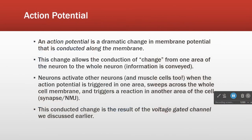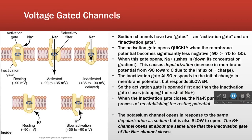It is propagated by voltage-gated channels — channels that open and close in response to membrane potential change. The voltage-gated channels we speak of are sodium and potassium. The sodium channel is a little more complex than the potassium channel because it has two gates: an activation gate and an inactivation gate. The potassium voltage-gated channel only has an activation gate.